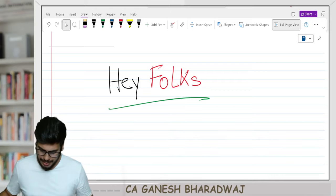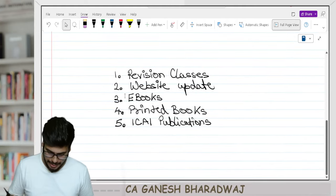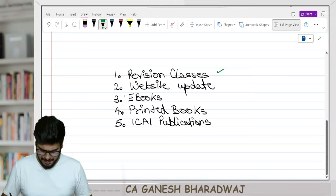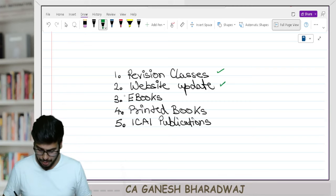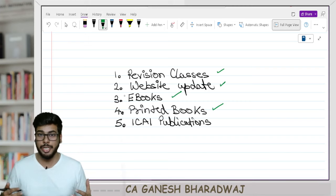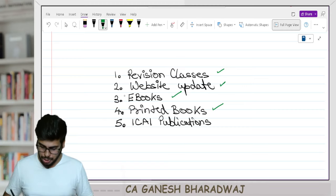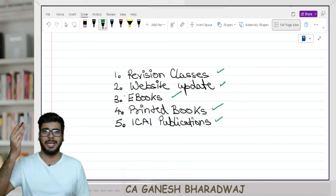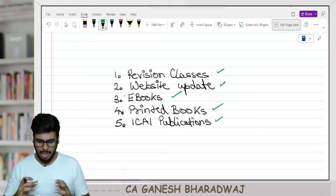In this video, I'm going to discuss five important things. The first one is regarding the revision classes. Then there is a small upgrade we are doing in our website. Then I'm going to talk about eBooks, then printed books — where you can place an order and we will deliver them. And finally, regarding ICAI publications — that is past exam questions, RTPs, MTPs, and all these things.